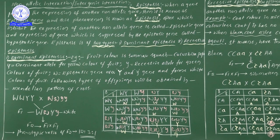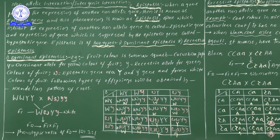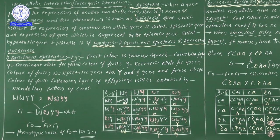Capital Y is a dominant allele for yellow color of a fruit, and small y is a recessive allele for green color of a fruit. So capital Y gives yellow color and small y gives green color.